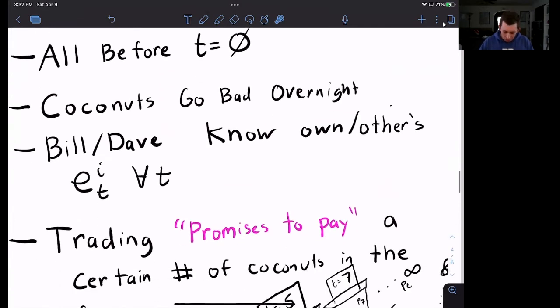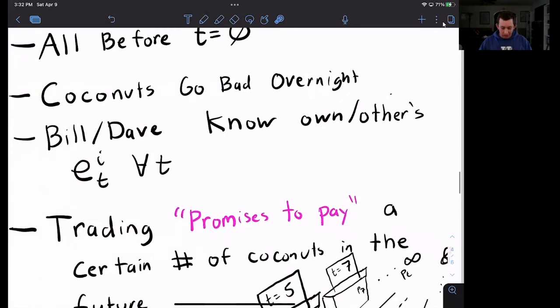So what are we trading exactly if coconuts go bad? We are trading IOUs or promises to pay. So if Bill wants Dave to give him a coconut in period 100, he would pay Dave some coconuts today in order to have Dave pay Bill back in period 100. So we're trading promises to pay a certain number of coconuts in the future.